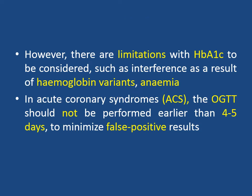However, there are limitations with hemoglobin A1c to be considered, such as interference as a result of hemoglobin variants such as hemoglobinopathies, sickle cell anemia, or thalassemia. In acute coronary syndrome, the oral glucose tolerance test should not be performed earlier than 5 days to minimize the false positive results because of transient stress hyperglycemia.